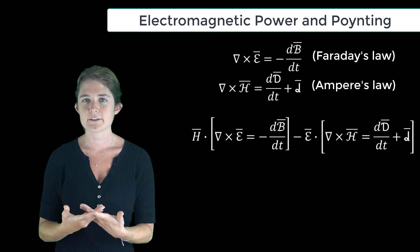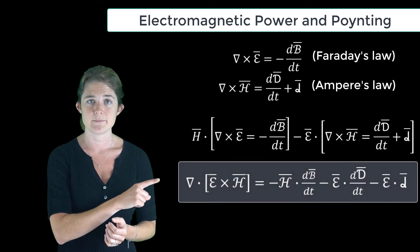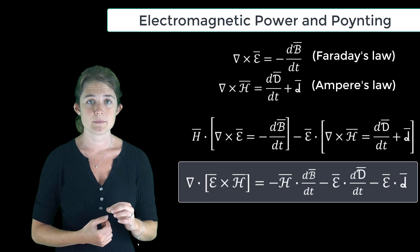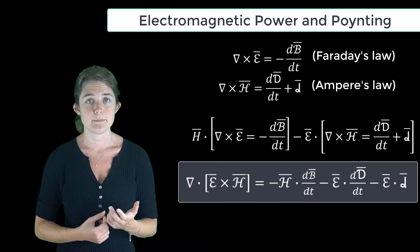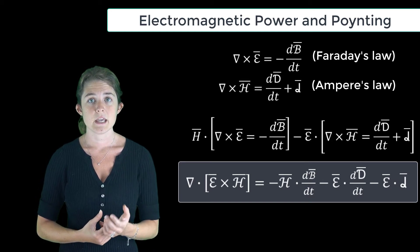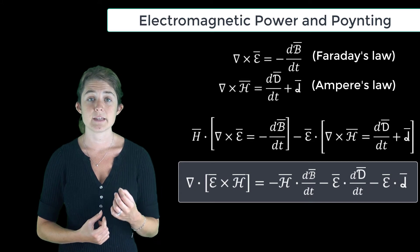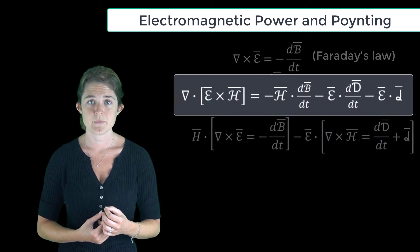Using vector identities, this can be rearranged to this equation. Note that we are using the script forms of E, H, B, D, and J in order to be explicit about the fact that these are time domain quantities.